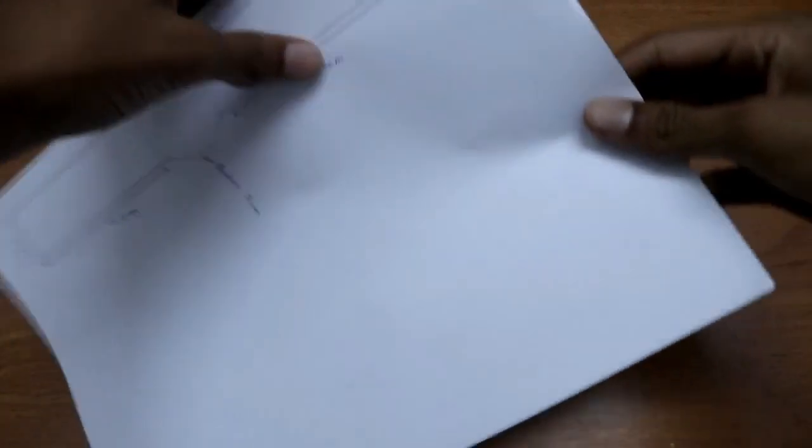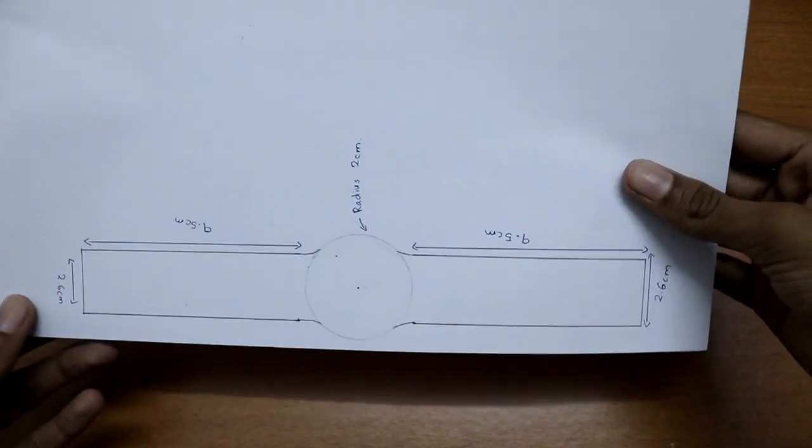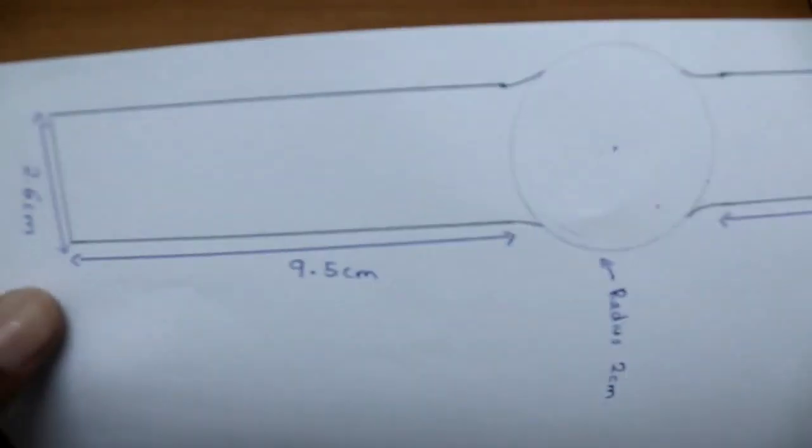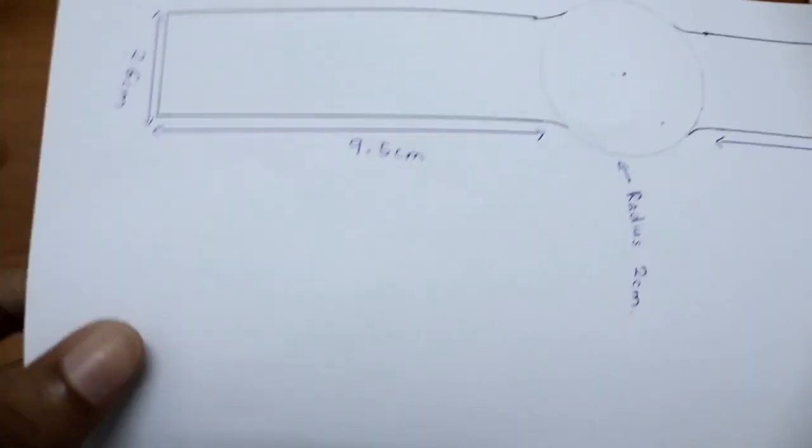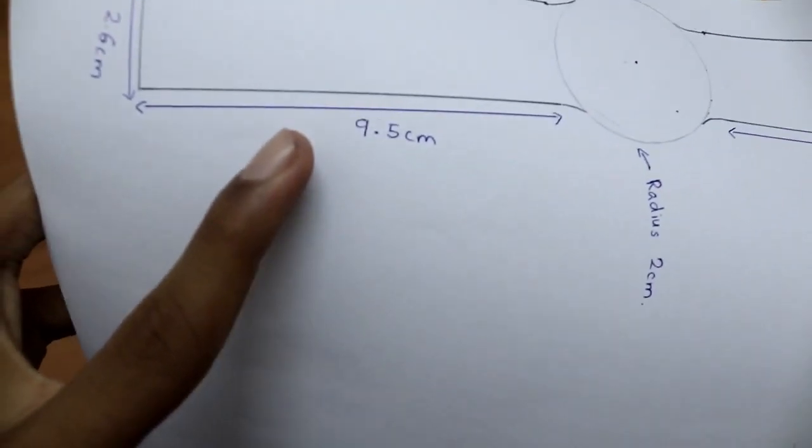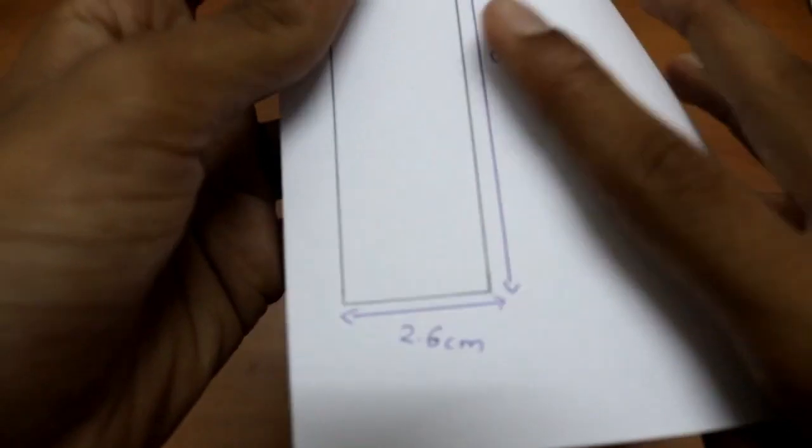Now let's make it. First of all, take your A4 sheet and do some markings. Copy the markings I have done. The lines of the watch is 9.5 centimeter in length and the breadth on the side is 2.6 centimeter.